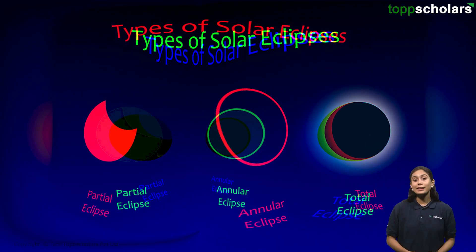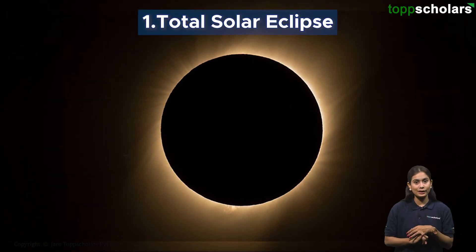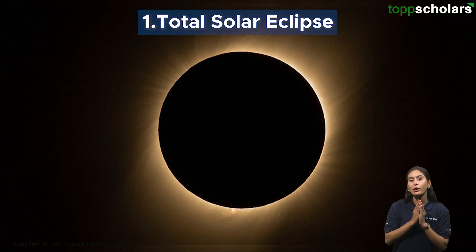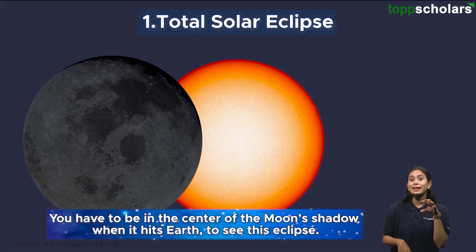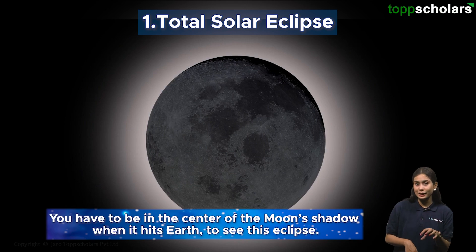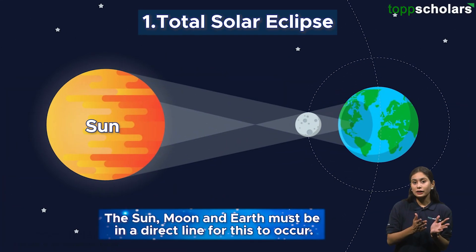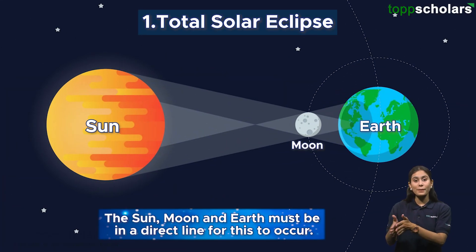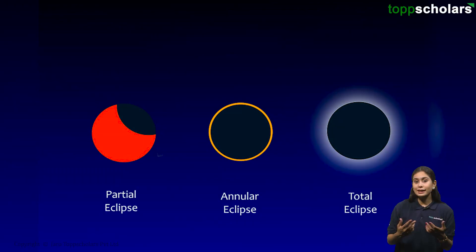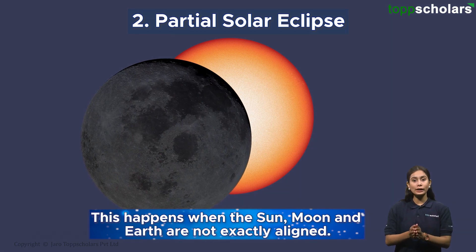There are three main types of solar eclipses. Number one: the total solar eclipse. This can only be seen from a small area on Earth — you must be in the center of the moon's shadow when it hits Earth. The sky becomes very dark, like during the night, and the Sun, moon, and Earth must be in a direct line for this to occur.